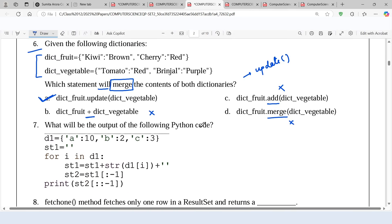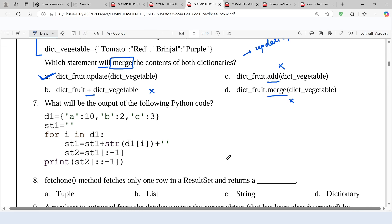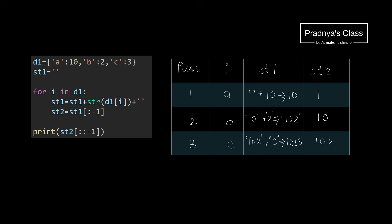Followed by the 6th question, we have one more question based on dictionary — that is the 7th — in which we need to predict the output of the following code. Read the code carefully, and if you can do it yourself, pause the video and give it a try. Hope you got the correct output. Let's work out together. Here is the dry run table — let's understand this code in short.